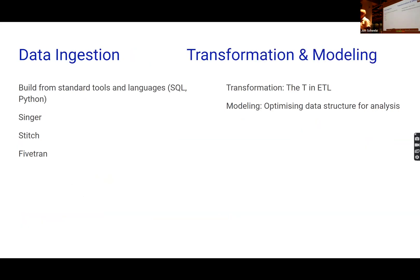For ingesting data, we have some choices. We can build it ourselves using Python or another programming language, or we can use one of the tools that are available, whether they're open source or commercial. The commercial tools cost some money, but they can save us a lot of time in figuring out how to connect to these sources because they often have connectors for them. If we have to build a connector ourselves anyway because it's a non-typical source or not one of the common ones, then we may not bother with a commercial tool and decide to build the whole thing ourselves.